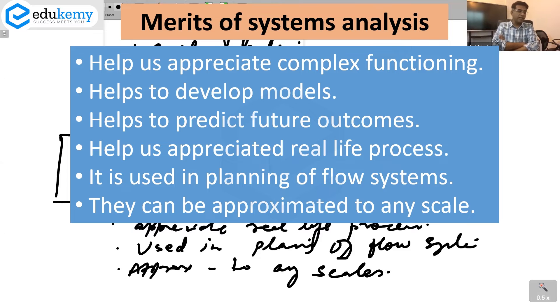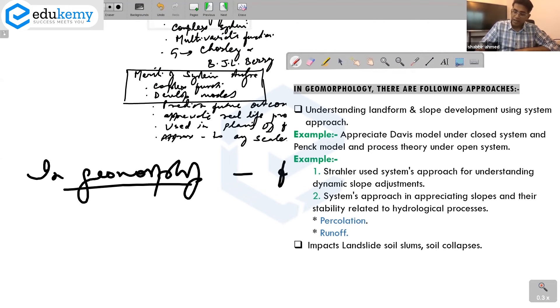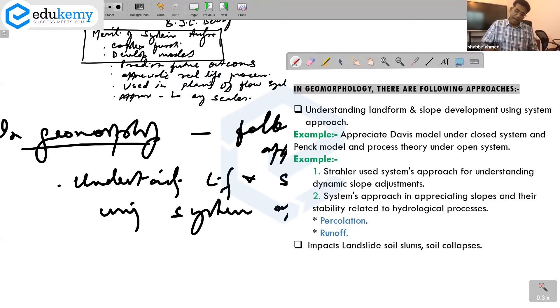In geomorphology there are following applications. One is understanding landform and slope development using systems approach. For example, appreciating Davis model under systems analogy, understanding King's model and process theories.